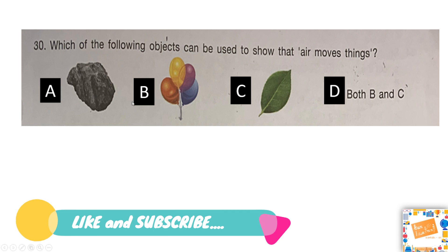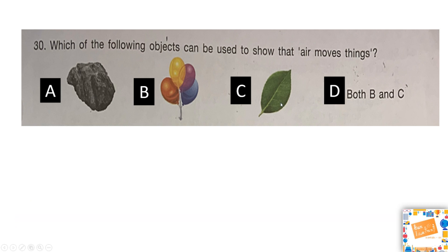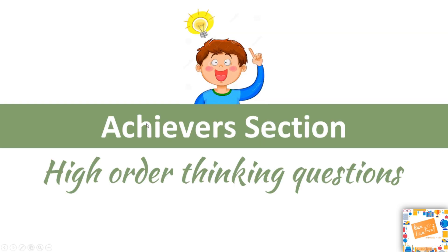Our next question: which of the following objects can be used to show that air moves things? Is it A: a rock, B: balloons, C: a leaf, or D: both B and C? The objects that show air moves things need to be light — that is the balloon and the leaf — so our answer is D: both B and C.